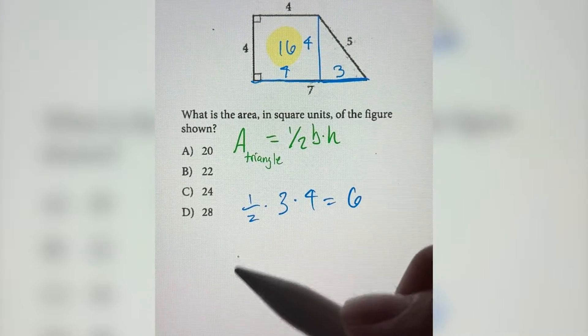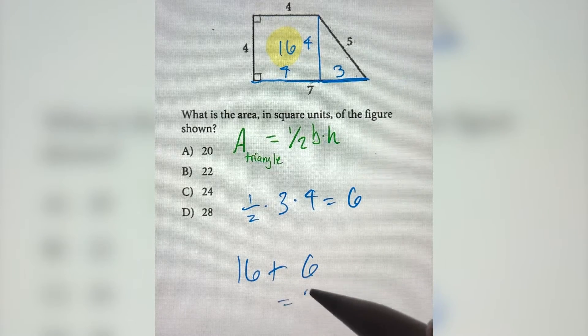So now the total area is 16 plus 6, which is 22.